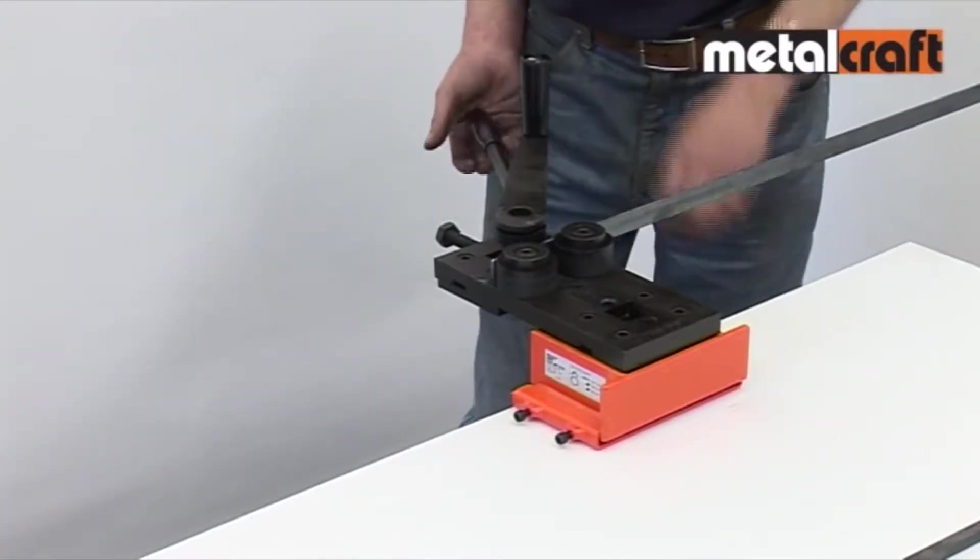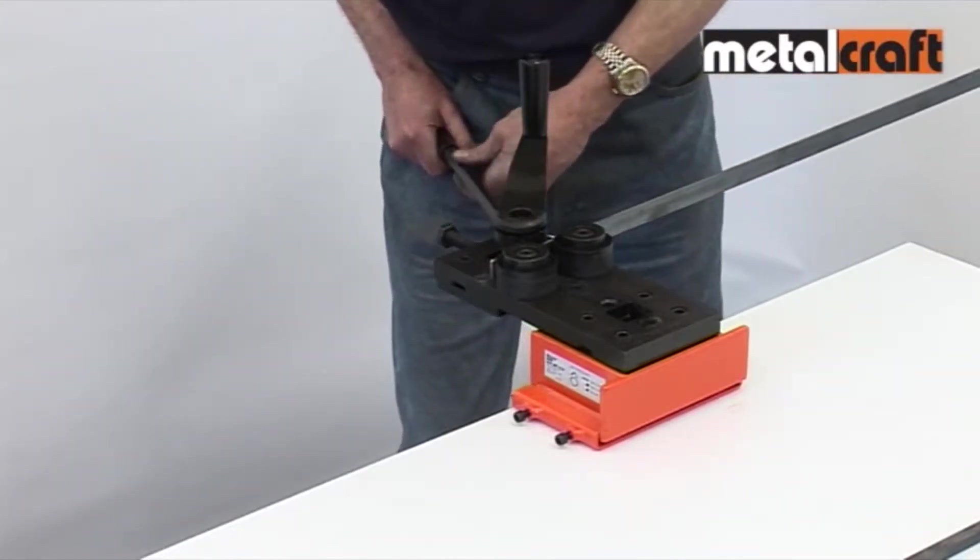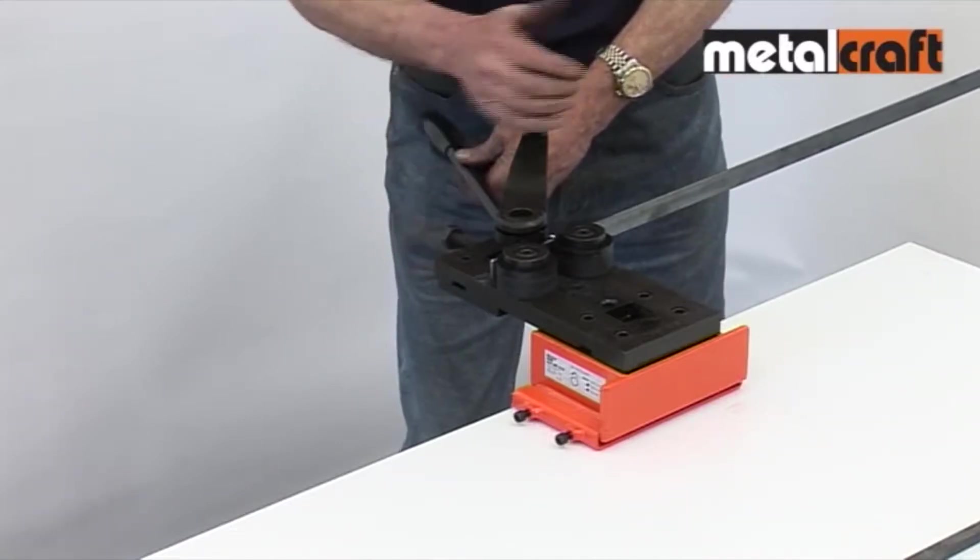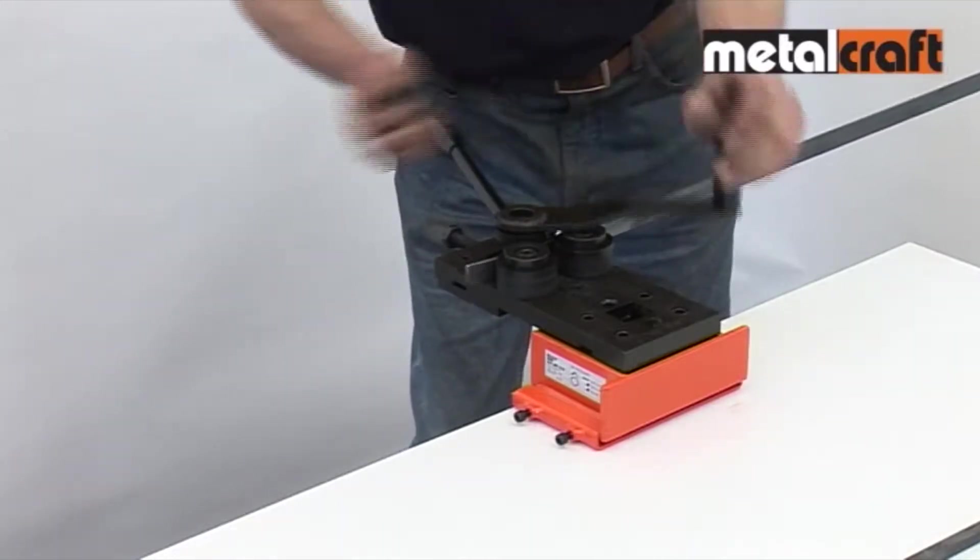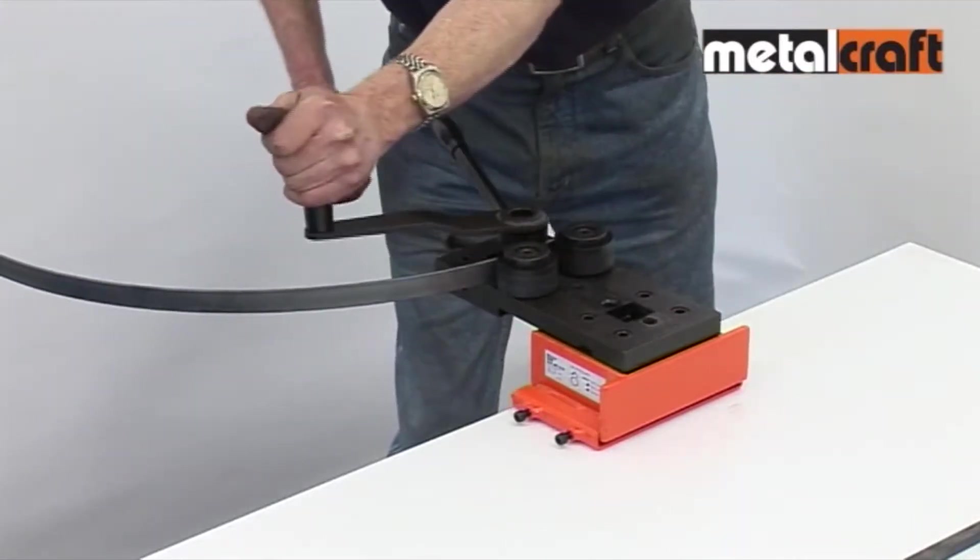You're now ready to start rolling, and this is done by applying gentle pressure on the long lever, and then turning down the adjusting screw to maintain that pressure. Then by operating the winding handle, you drive the bar through the rollers and your curve starts to take shape.